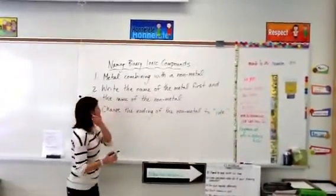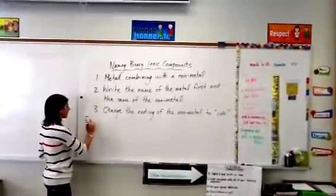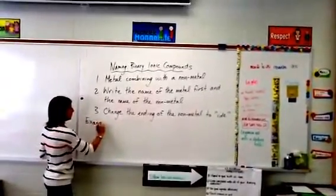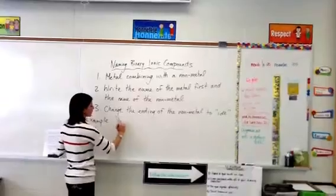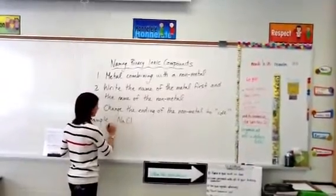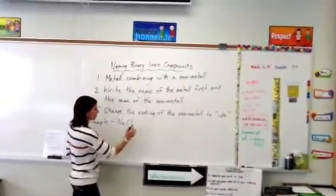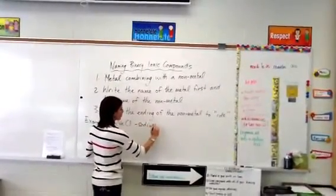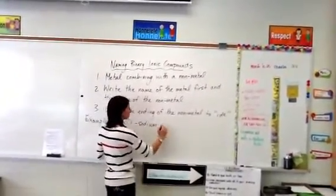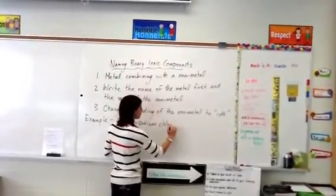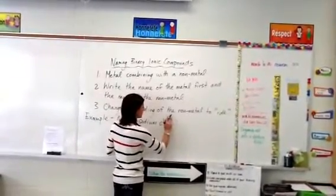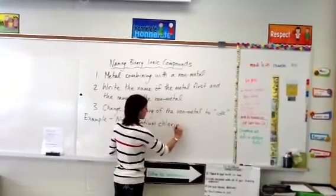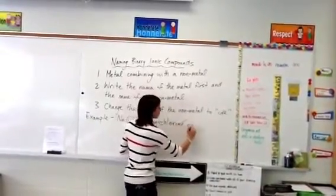So for example, if we look at an ionic compound like sodium and chlorine, the name is sodium chloride. So we have sodium, which we write first because it's the metal, and we change chlorine to chloride.